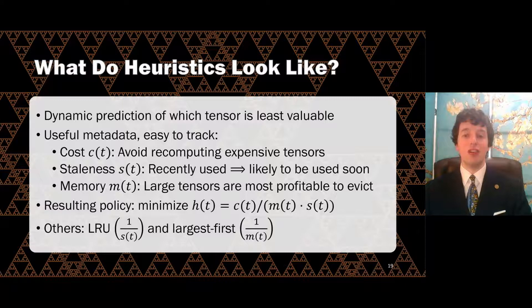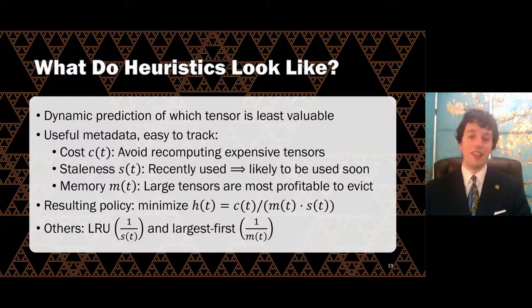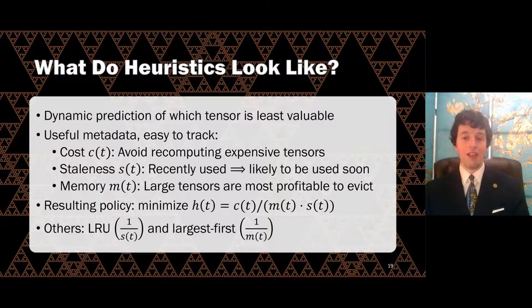What do heuristics in DTR look like? Similarly to heuristics in caching, a DTR heuristic is a prediction of which tensor is least valuable and hence is the best to evict. We devised a heuristic by the following intuition. The best tensors to evict are cheap, to avoid expensive recomputations, stale, meaning they are unlikely to be needed soon, and large, meaning they would gain back the most space.